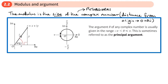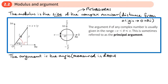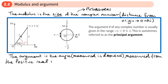And the argument — it's not what you do when you disagree with your teacher — the argument is the angle, measured in radians, from the positive real axis. Here's a complex number drawn on an Argand diagram, not just a coordinate grid.